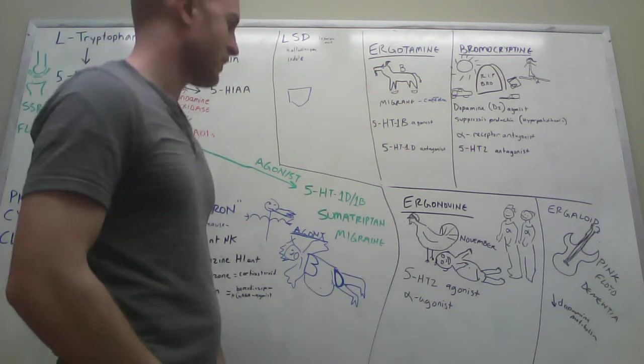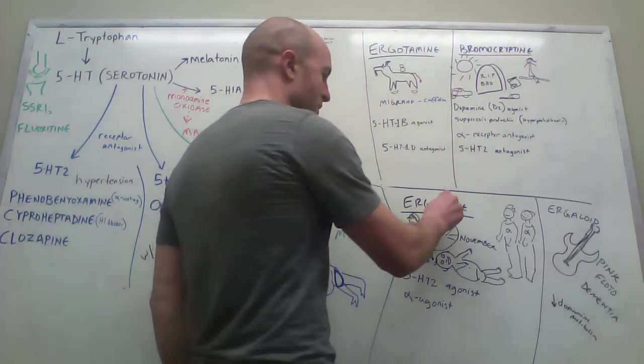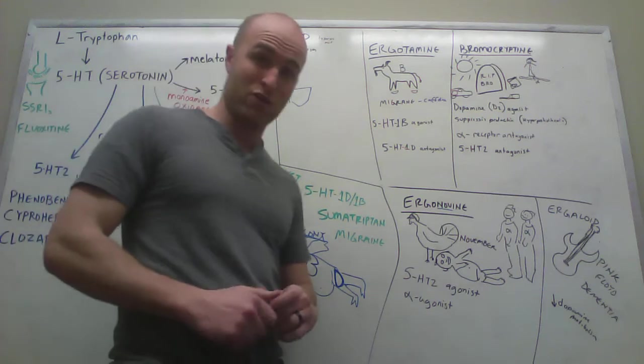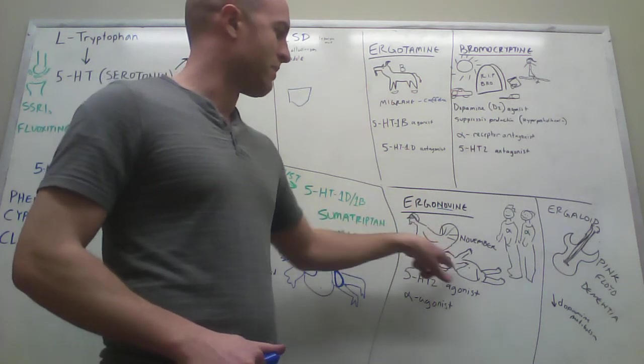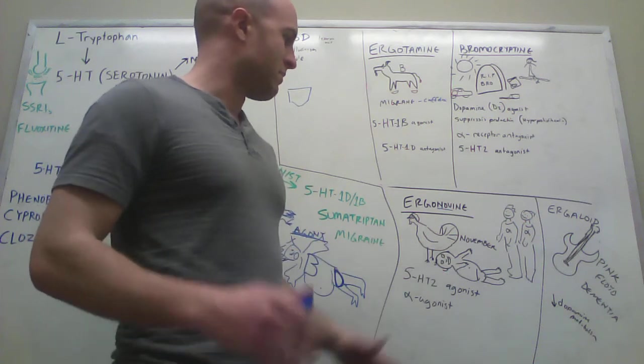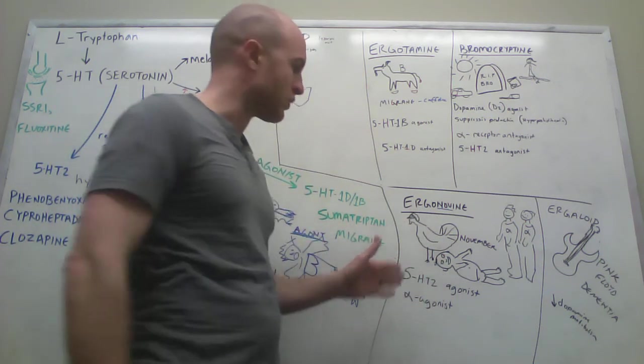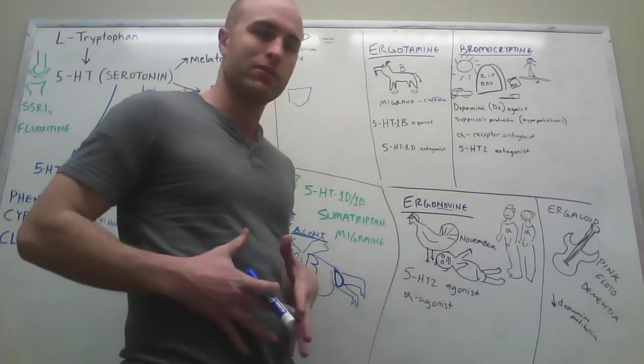Next, ergonovine. Ergonovine. Novine kind of sounded to me like November. In other words, you're going to go in November, you're going to have your baby in November. Here's a turkey - November. And here's the baby. Because this one causes uterine contraction. So you give ergonovine to a woman, your uterus is going to start tightening down.